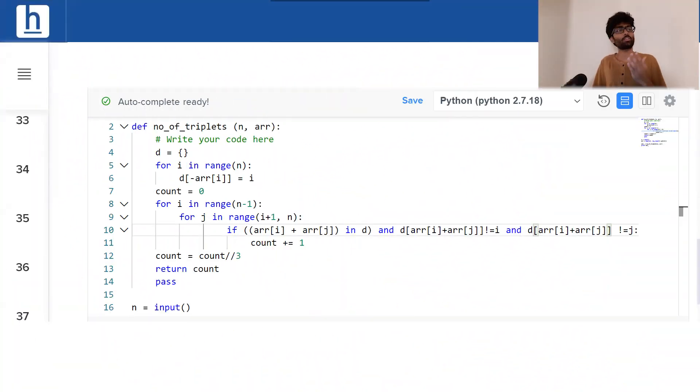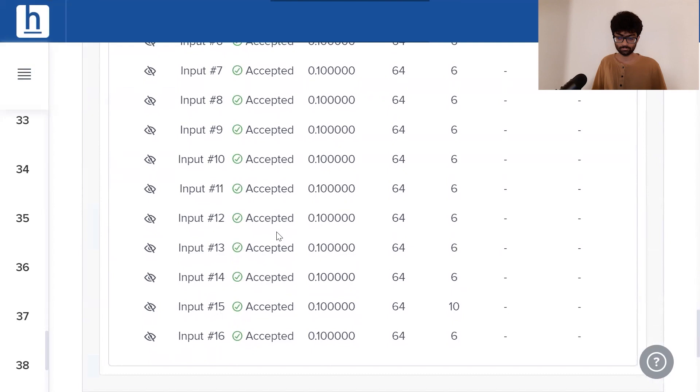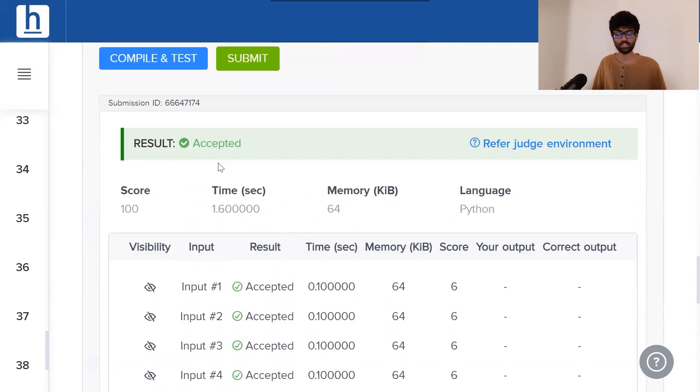The code as we can see here is awfully simple once we know the logic. We just store the negative of each number inside a hash map. Following that we iterate through each and every single element. If ARR of i plus ARR of j is in d, we increase the count and we divide it by 3. Simple. All we do is return our count and compile our code. All 16 test cases have been accepted.